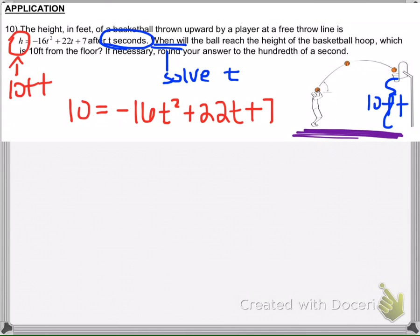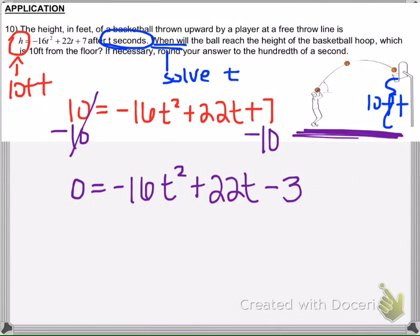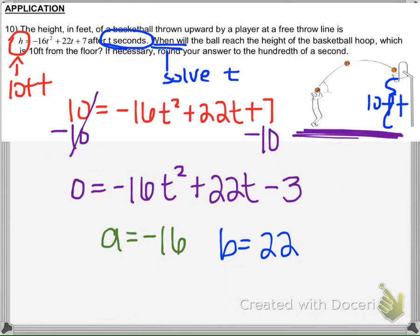The method I'm going to use is the quadratic formula. To do that, the equation needs to equal zero, so I'm going to subtract 10 from both sides. Now I know that A is negative 16, B is 22, and C is negative 3.